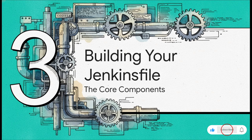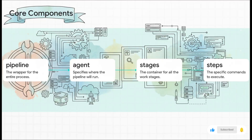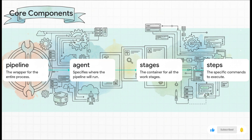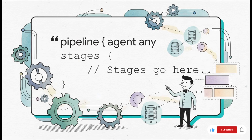Let's actually build something — our very first Jenkinsfile, piece by piece, starting with the absolute core components. Every single declarative pipeline is built from four fundamental pieces. First: 'pipeline' — the big wrapper around everything. Then 'agent' — this tells Jenkins where to run the job, whether on any available machine, a specific one, or inside a Docker container. Next up: 'stages' — the container for all the different parts of your workflow, like build, test, and deploy. And finally inside each stage: 'steps' — this is where the real work happens, the actual commands you want to execute.